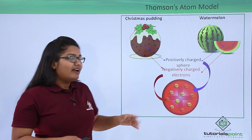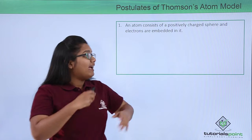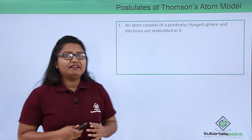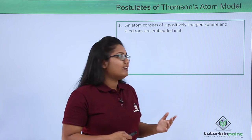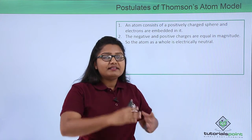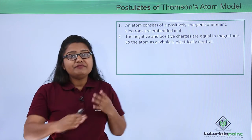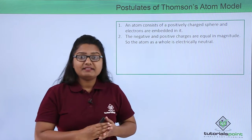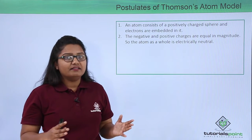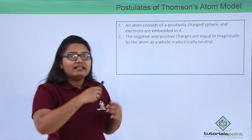So now let us look at the postulates he has given. Firstly, he said that an atom consists of a positively charged sphere where the negatively charged electrons are simply embedded. And again he said that the negative and positive charges in an atom — their magnitudes — are exactly equal to each other, which results in the nullification of their charges. That is, the positive charge and the negative charge exactly cancel out each other, leaving us with a neutral atom, which is electrically neutral.